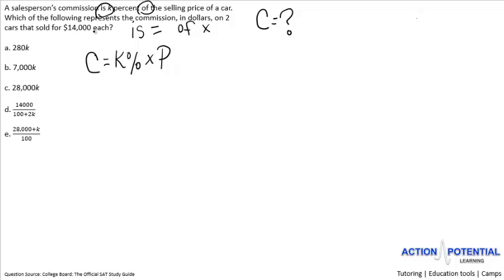On two cars that sold for $14,000 each is the next piece of information that you're given. Since $14,000 does have a dollar sign in front of it, we should assume that this is the selling price of a car. However, since there's two cars mentioned in the problem, we know that P should be 2 times $14,000 or $28,000.